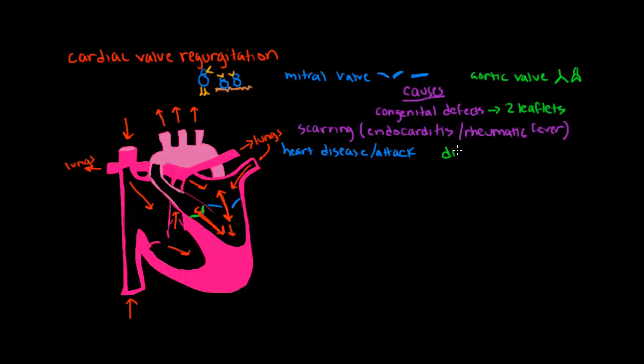Aortic valve regurgitation can be the result of a diseased aortic root. The aortic root is essentially the wall of the aorta and the components that allow the aortic valve to open and close. In particular, a connective tissue disorder called Marfan syndrome damages this aortic root and can cause that valve to close improperly.